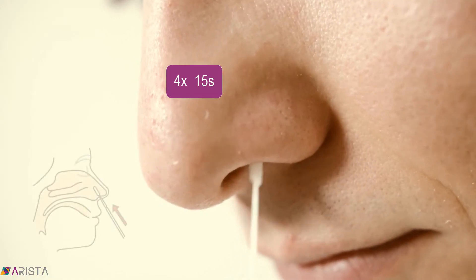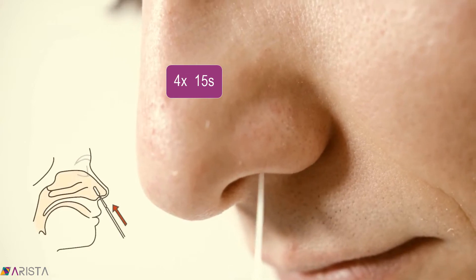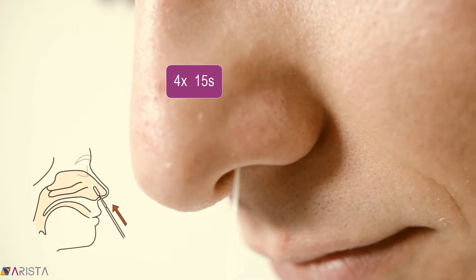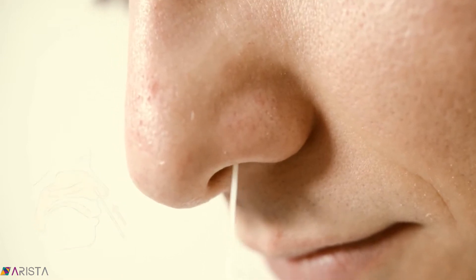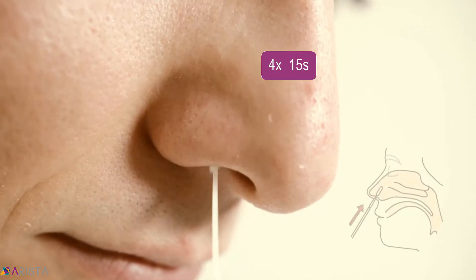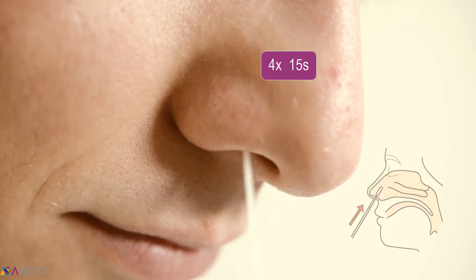Insert the swab sponge tip 1.5 cm into your nostril and slowly rotate the swab four times in a circular path against the inside of your nostril for 15 seconds. Use the same swab and repeat in your other nostril.